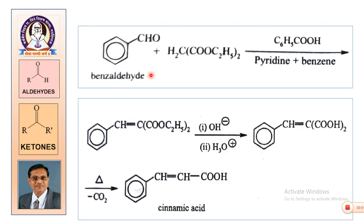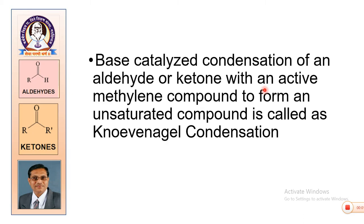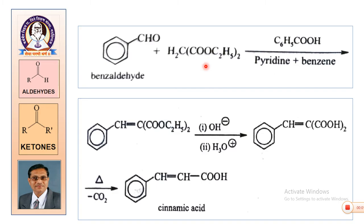Consider this example: benzaldehyde, which is an aldehyde, and diethyl malonate — a diester of malonic acid with two C2H5 ester groups. As per the definition, the first compound is the aldehyde or ketone and the second is the active methylene compound. The methylene CH2 group here is activated by the two COO-C2H5 ester groups flanking it. Such compounds where the methylene group is sandwiched between reactive groups like esters are called active methylene compounds. These two hydrogens are activated for the chemical reaction.